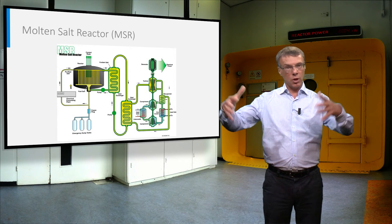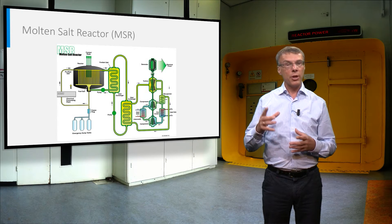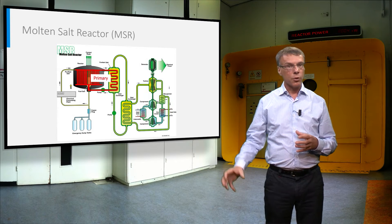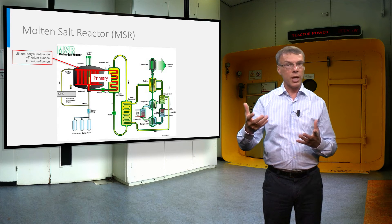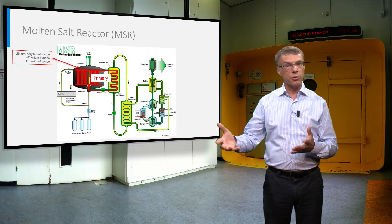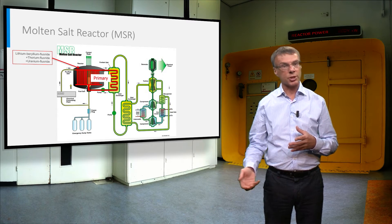This reactor consists of a large block of graphite, the gray oval shape in the plot, with channels in it. A fluoride salt, typically thorium-fluoride and uranium-fluoride dissolved in lithium-beryllium-fluoride, flows from bottom to top through the core and back through the heat exchanger.